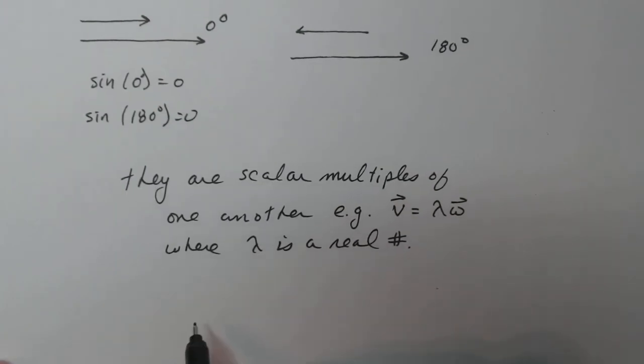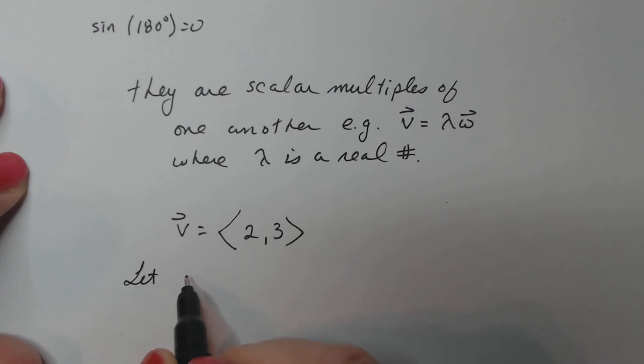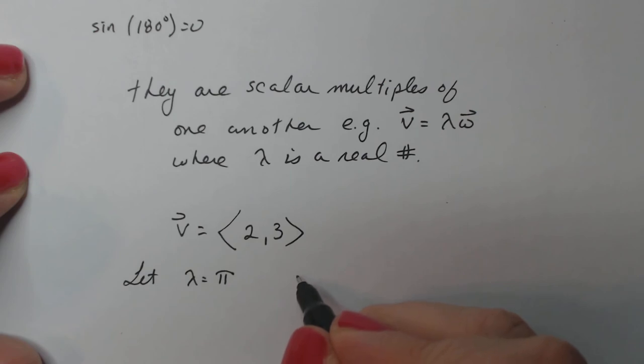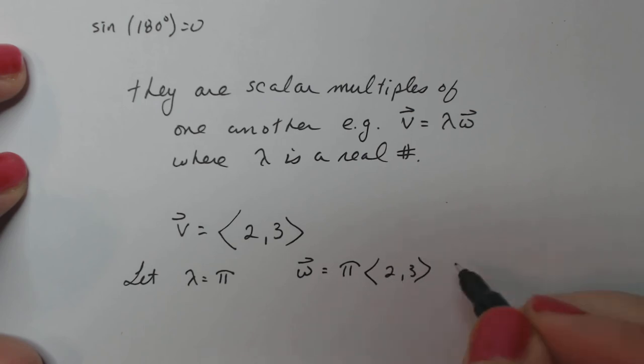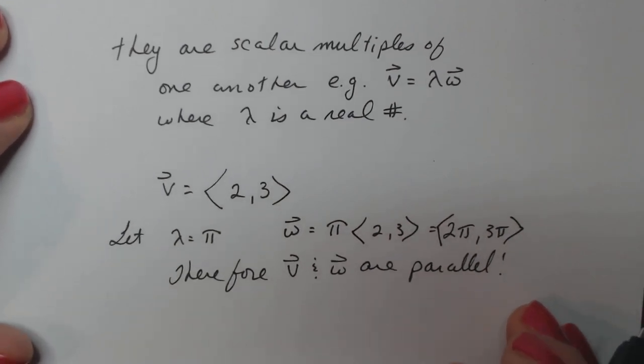So for instance, if I have the vector, let's use the vector from the previous problem. If I have the vector 2, 3, and I want to find a vector parallel to it, I just have to multiply V times any real number I choose. So I'm going to let lambda equal pi, and then I'm going to say my vector parallel W is going to be pi times 2, 3, there's my scalar, or I can say 2 pi comma 3 pi. Those two are scalar multiples of one another, so they have to be parallel.